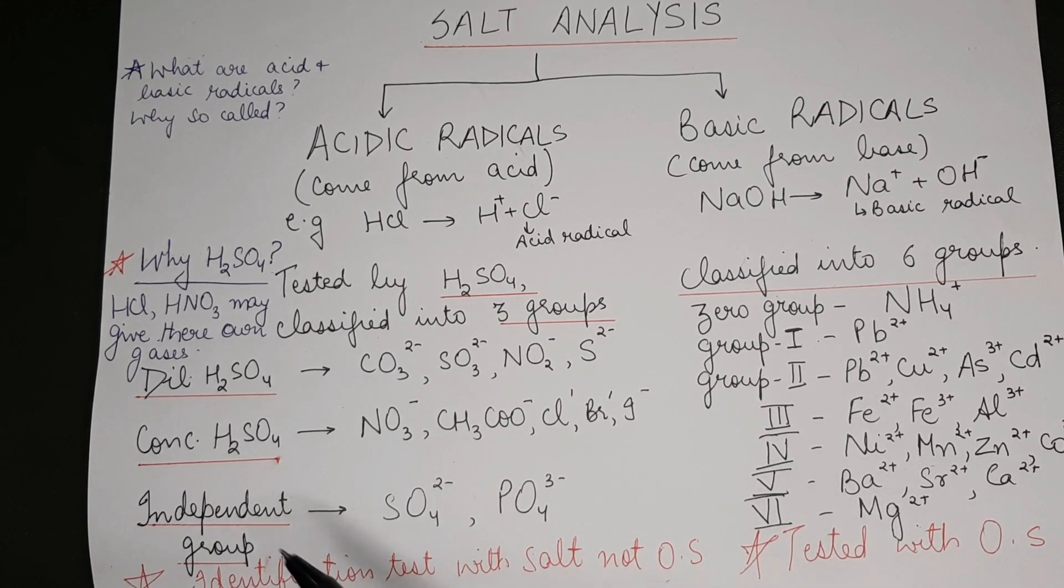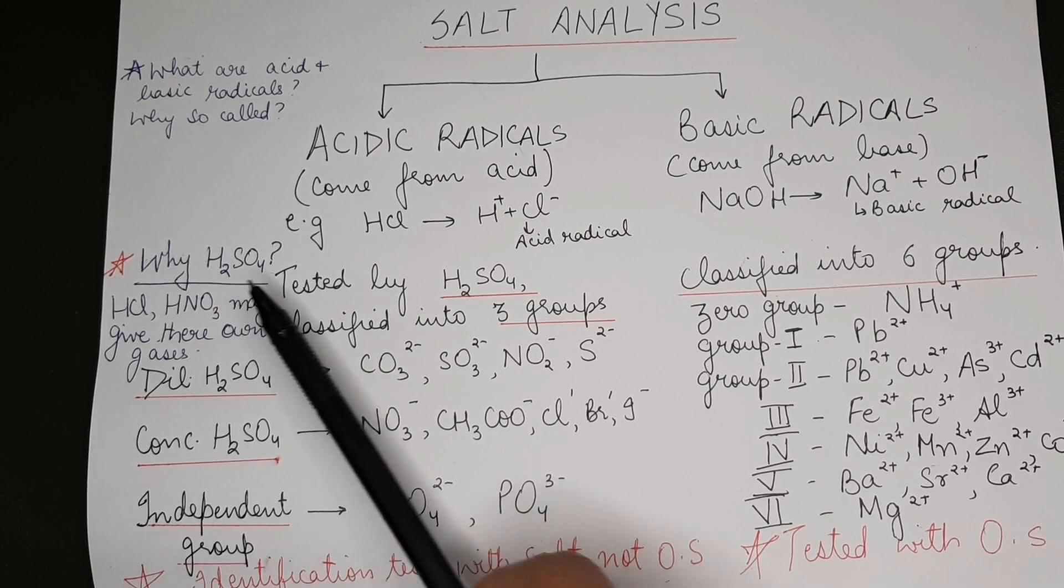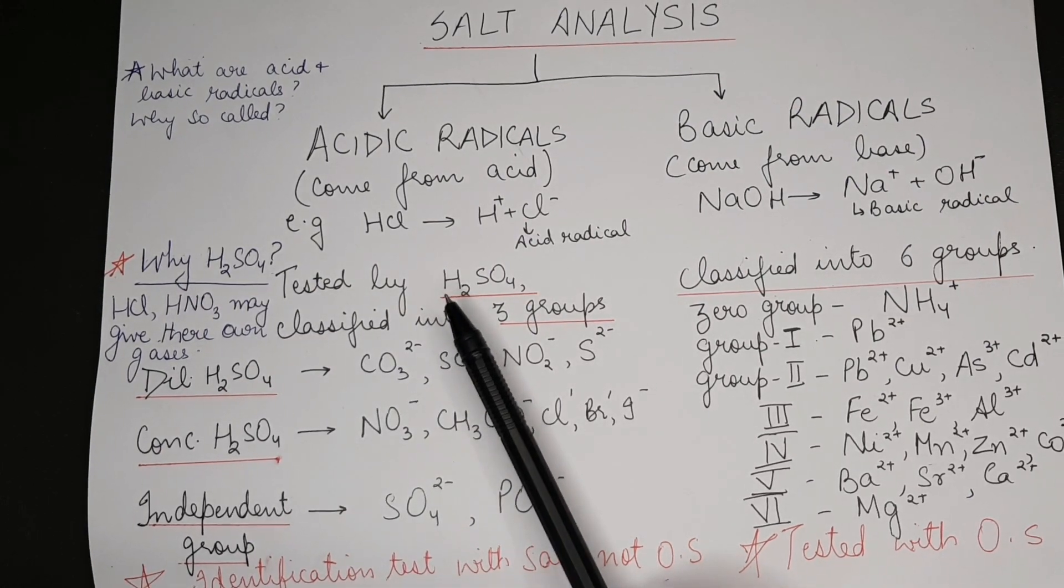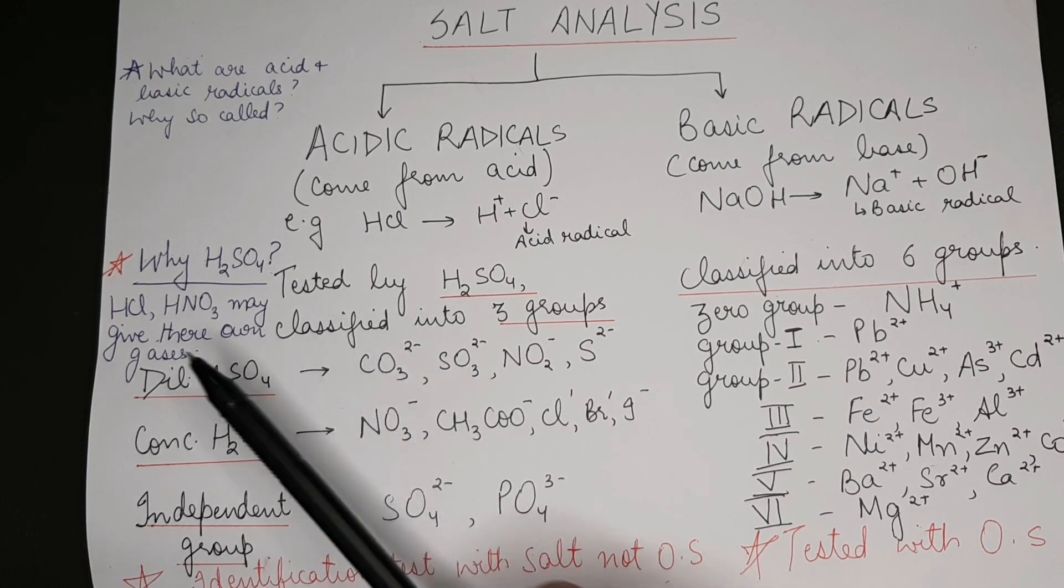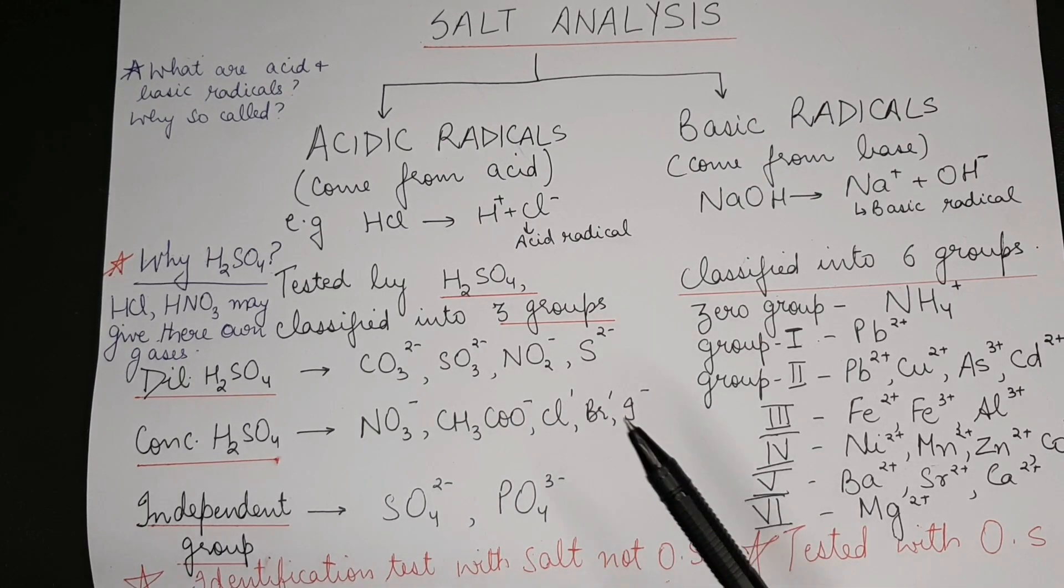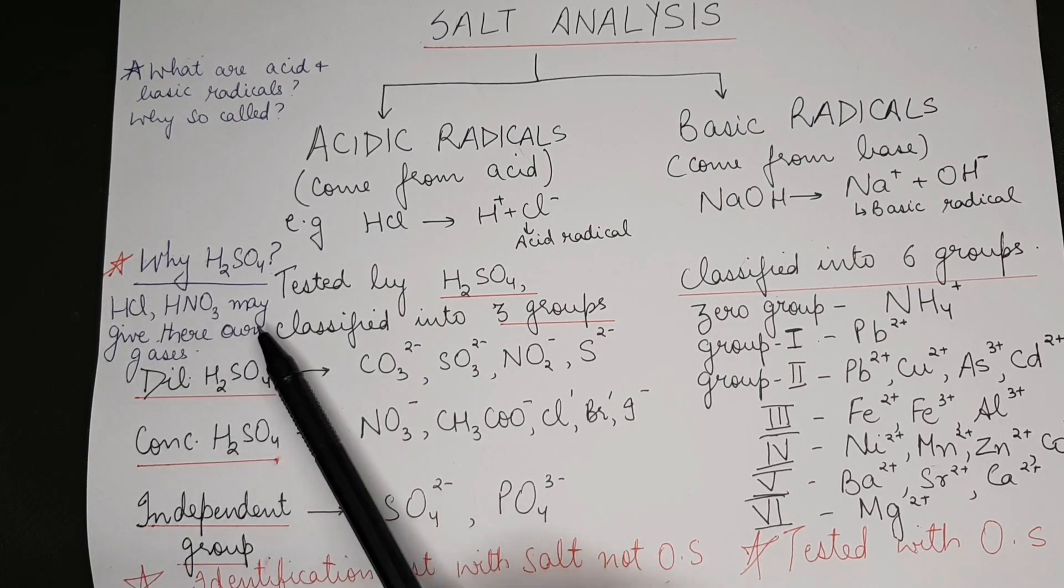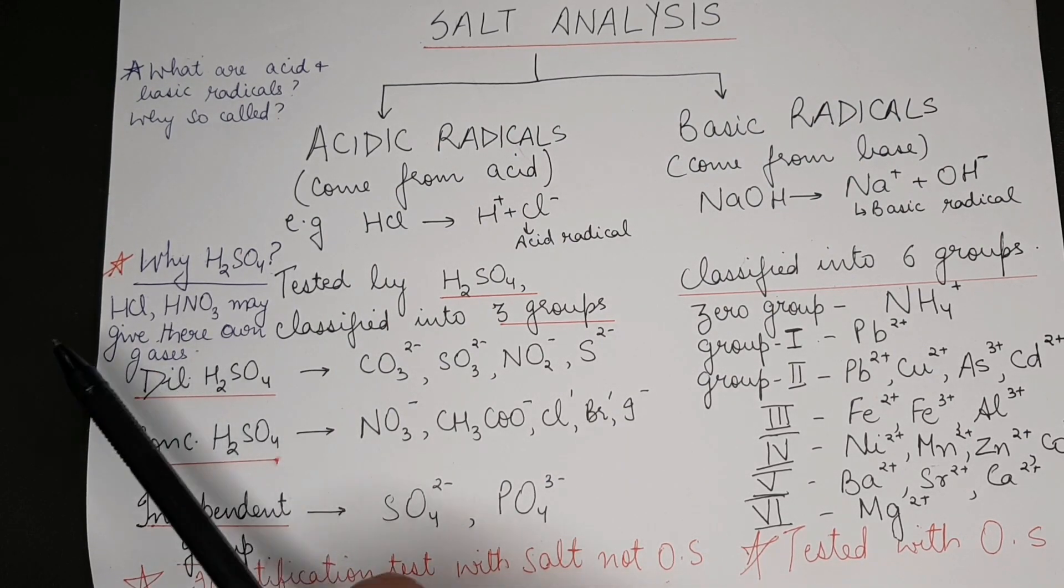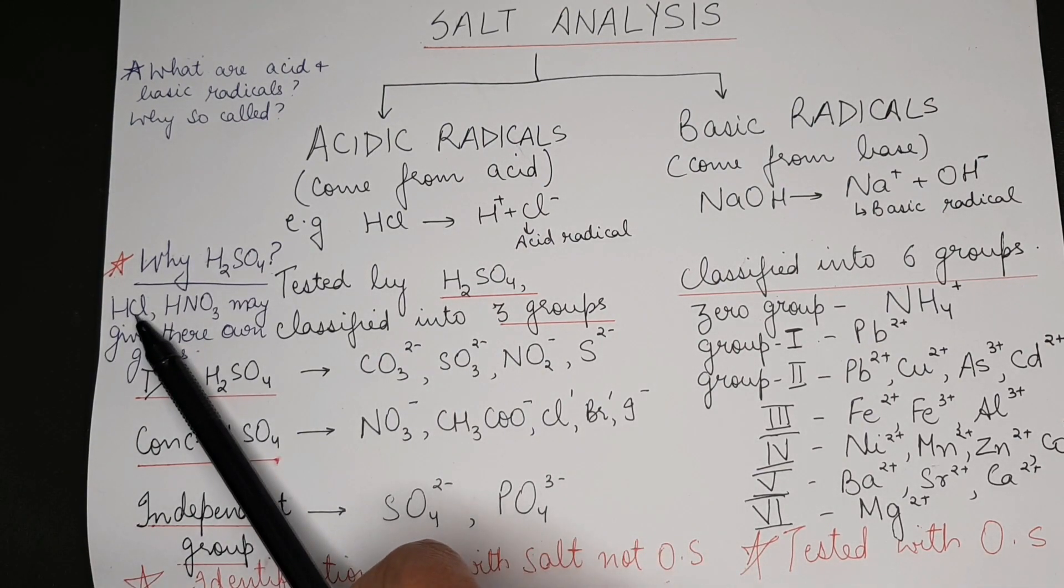The question here is: why do we use sulfuric acid for detection of anions, that is the acid radicals? Because we have to observe liberation of some specific gases for specific ions. If we use HCl and nitric acid, they may give their own gases. HCl might decompose to give chlorine or HCl itself is a gas. Similarly, nitric acid might decompose to give a gas or nitric acid vapors may be confusing.